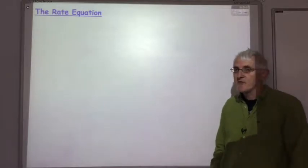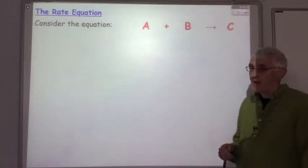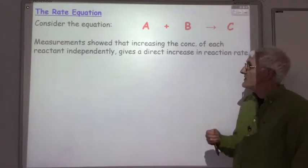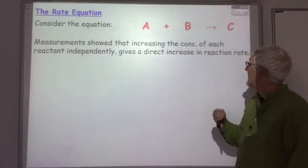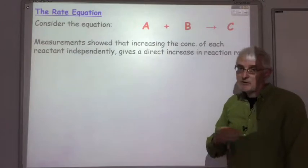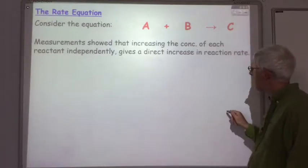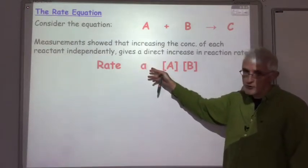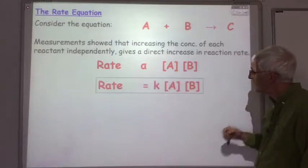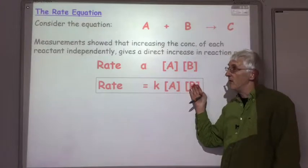The first thing we're going to do is work out the rate equation for our reaction. Let's look at our general reaction A plus B reacting to give us C. Let's assume we've done some measurements and that showed that if we increase the concentration of each reactant independently we get a direct increase in the reaction rate. So if we double the concentration of A we double the reaction rate. If we double the concentration of B we double the reaction rate. So the rate is directly proportional to the concentration of A times the concentration of B, and we can write this as: rate equals k times concentration of A times concentration of B. This is the rate equation for this particular reaction.